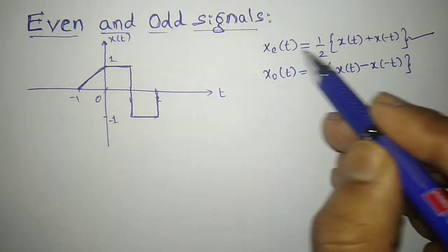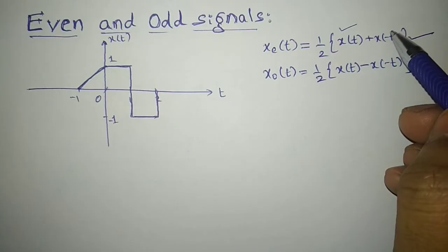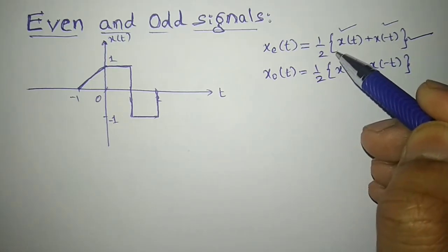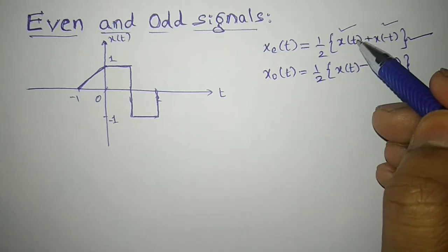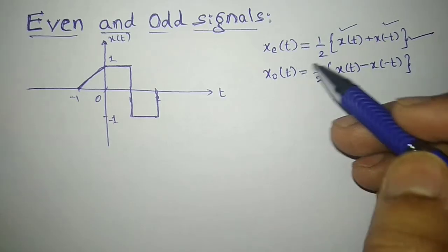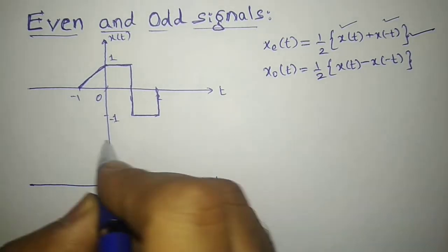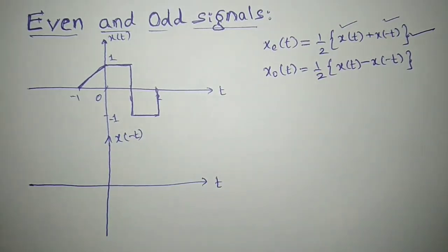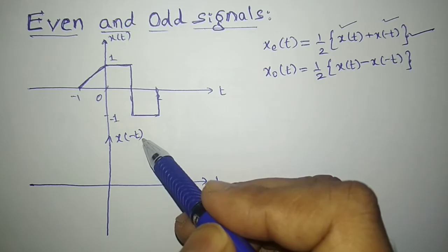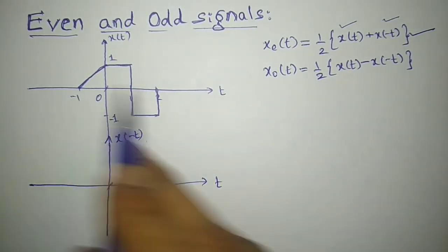To get the even part xe, I must know what is x(t), which is given, and I must also know what is x(-t). Once I know these two signals, I have to add them and then divide by 2. x(-t) is the mirror image of x(t), or it is also called the flipped signal of x(t). So whatever is there on the x-axis will get flipped.